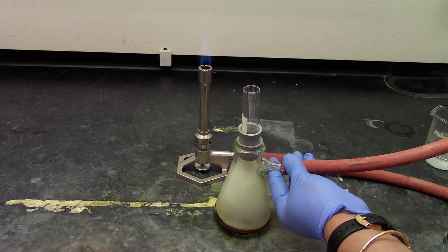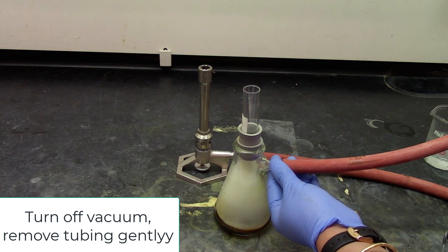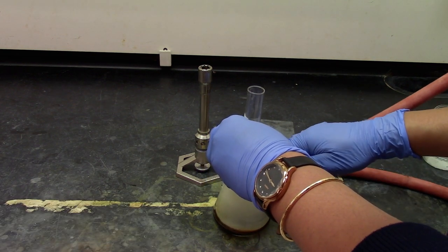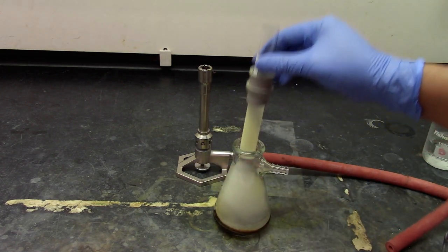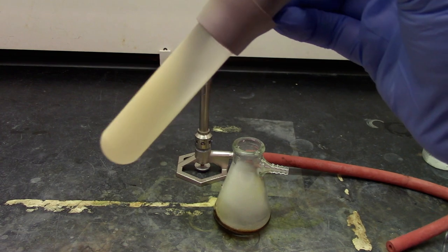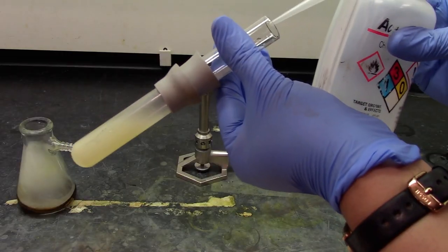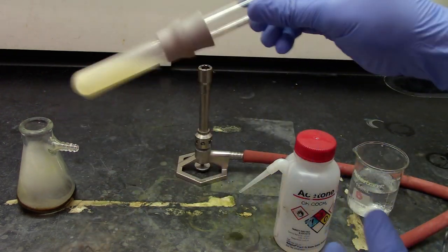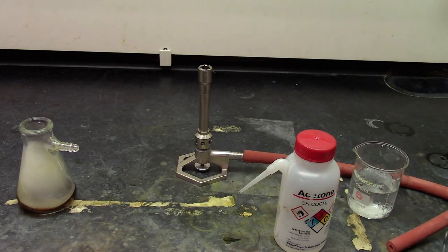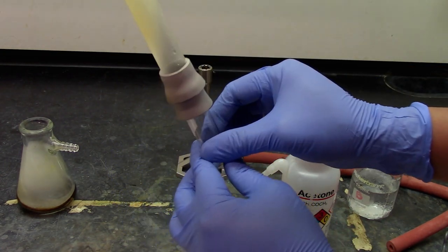Once sublimation is done, turn off the vacuum and remove the tube gently and take out the test tube. You see the caffeine on the test tube. Carefully discard the ice-cold water from the test tube, rinse the inside of the test tube with some acetone, and then blow some air to dry the test tube.